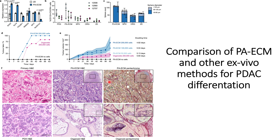In terms of cancer stem cell markers, they found that markers such as SOX2 and KLF4, which are important markers for stem cells, are expressed almost twice as much compared to expressions in 2D culture. However, other markers are not significantly expressed. In the case of ALDH1, the expression in 2D culture is actually higher compared to pancreatic cancer cells expressed in PAECM.